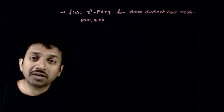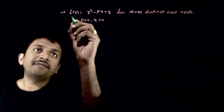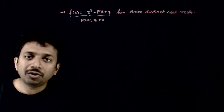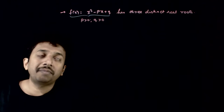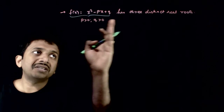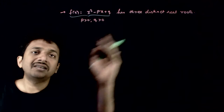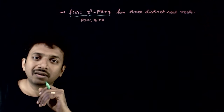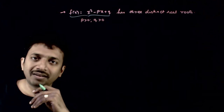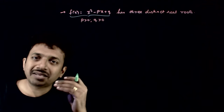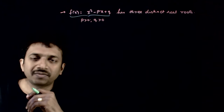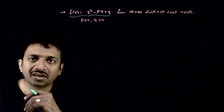Welcome students. In this question, you are given that f of x is equal to x cube minus px plus q. It is given that this function has three distinct real roots and p and q are greater than 0. You are asked to find the nature of maxima and minima of this function.